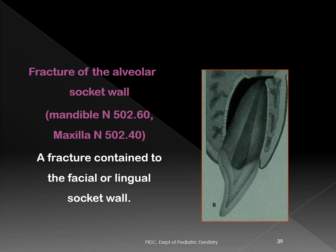We can have fracture of the alveolar socket wall, as in a lateral luxation injury where the root moves labially and fractures the alveolar process. This is very common in maxillary teeth because of the thin labial alveolar process. Different codes apply for mandible or maxilla.